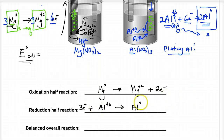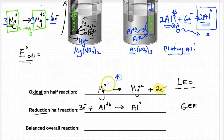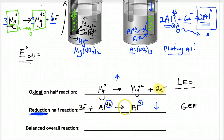Another mnemonic: 'LEO the lion says GER' — Losing Electrons is Oxidation, Gaining Electrons is Reduction. If electrons appear on the product side, you're losing them — that's oxidation, and your charge goes up (zero to +2). If electrons are on the reactant side, you're gaining them — that's reduction, and your charge goes down (+3 to 0). That's why it's called reduction: your charge gets lowered.